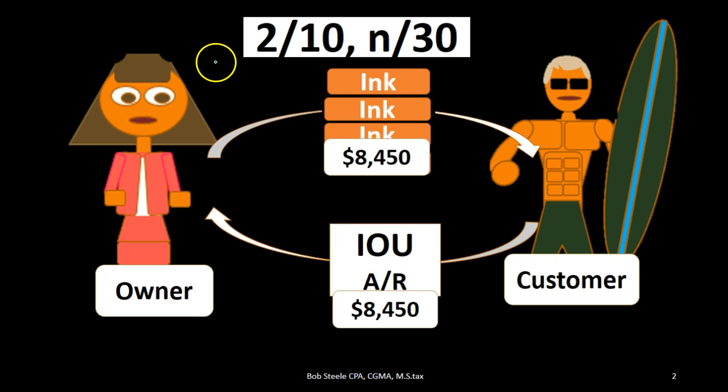We'll often see in the terms of a problem like this terms of 2/10 net 30. This notation means a two percent discount if the customer pays within 10 days; otherwise we want to receive payment within 30 days. When we first record the journal entry on the books, this doesn't impact that original entry — meaning we're going to put it on the books for the full $8,450. Then if the customer pays within 10 days, we will account for the discount at that time.